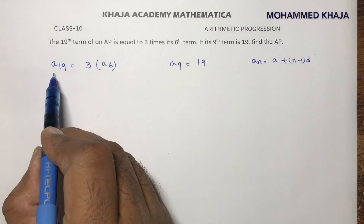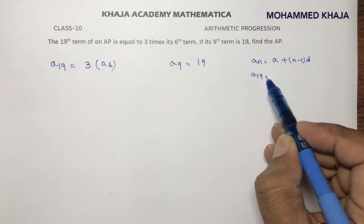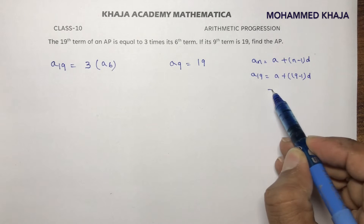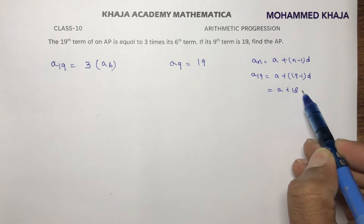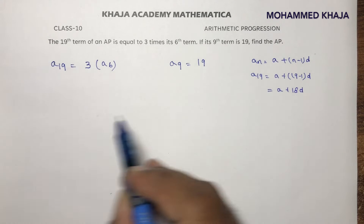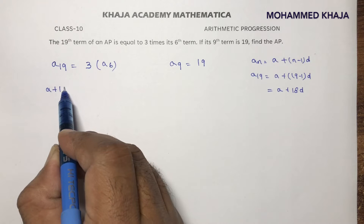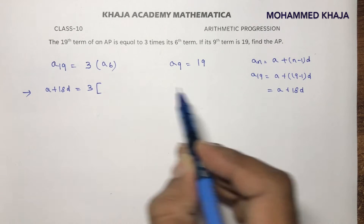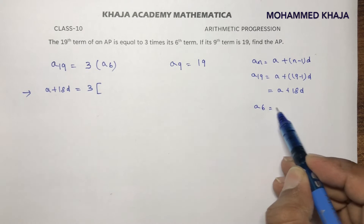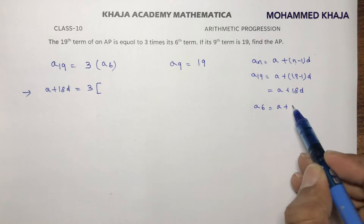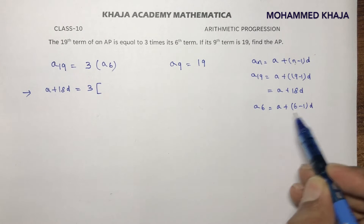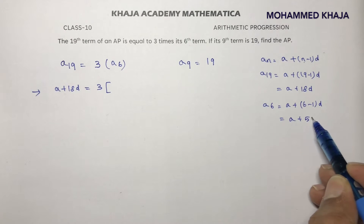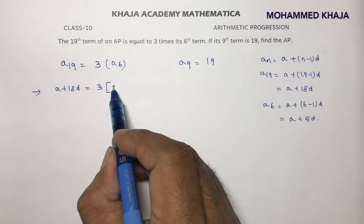Here, A19 will be A plus (19 minus 1) into D, which is A plus 18D. A plus 18D equals 3 times A6. A6 is A plus, in place of N, (6 minus 1) into D, which is A plus 5D.